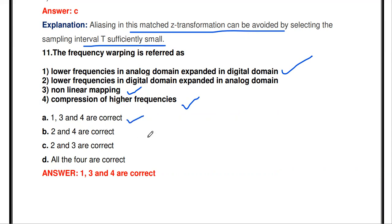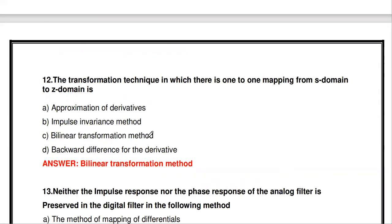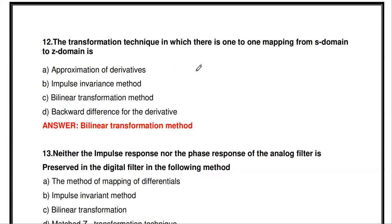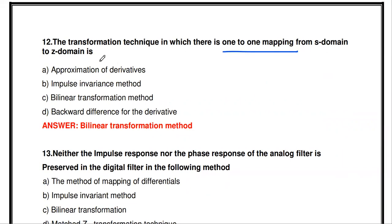The next question: the transformation technique in which there is one-to-one mapping from S-domain to Z-domain is which? We studied four different transformations: approximation of derivative, impulse invariant method, bilinear transformation, backward difference method, and so on. One-to-one mapping means one pole in S-domain is converted to one particular pole in Z-domain. This one-to-one mapping happens in bilinear transformation.